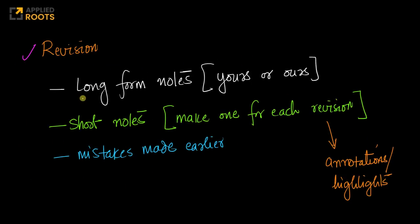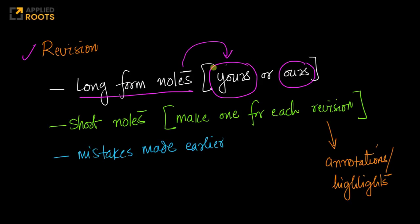For revision, a great way is to first have the long-form notes — either your own notes that you have written, or our notes with your annotations. Also, it's very helpful if you have short notes, because short notes help you revise the concepts in a shorter window of time than long-form notes. Different people have different ways of making short notes. If you can make short notes for every revision — while revising, just take a piece of paper and keep writing all the key highlights — that is actually great.